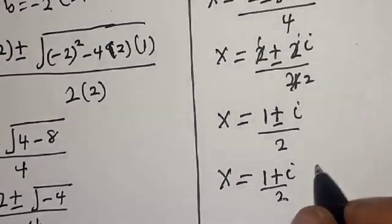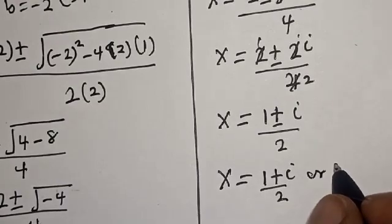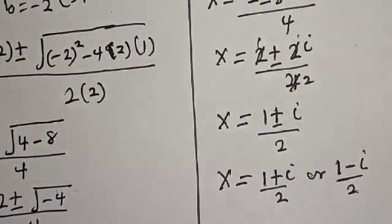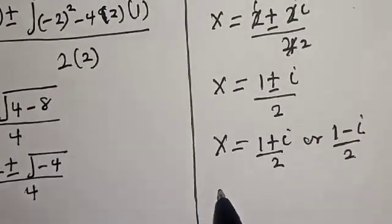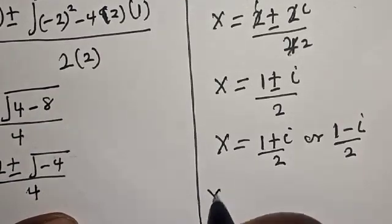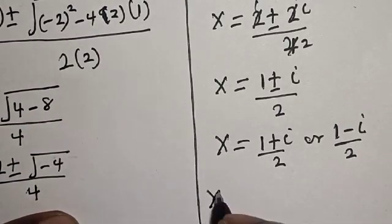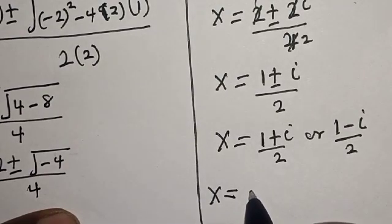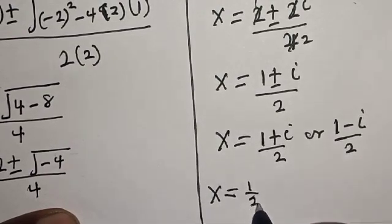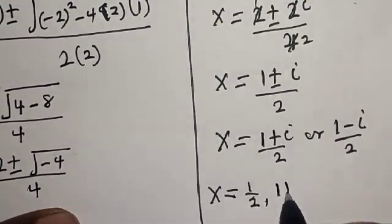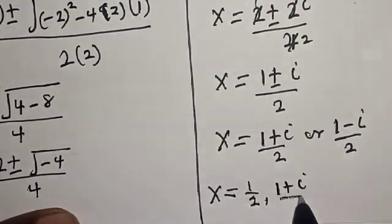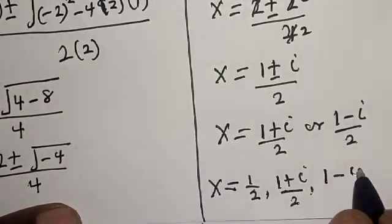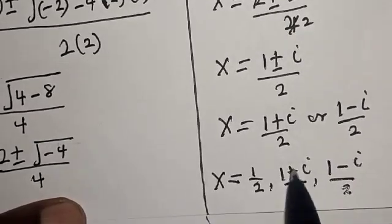Therefore the final answers are: s equals 1 over 2, or s equals (1 plus i) over 2, or s equals (1 minus i) over 2. These are all the roots of the given equation.